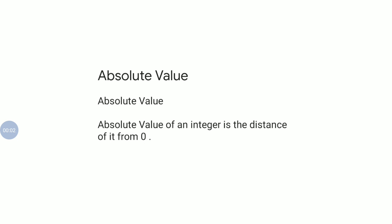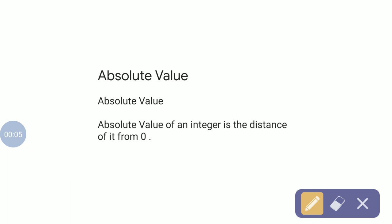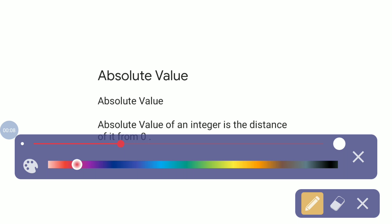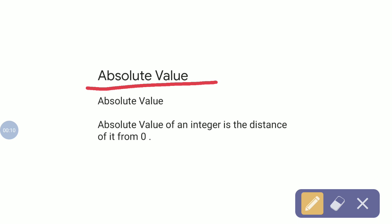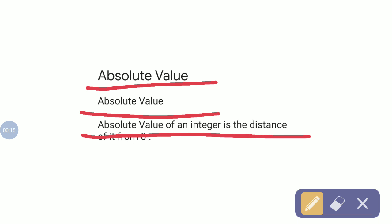A very warm welcome to the Informative World. In this part we are going to discuss about absolute value and additive inverse. Let's begin with absolute value. Absolute value of an integer is the distance of it from 0. That means the absolute value of a particular integer indicates its distance from 0.